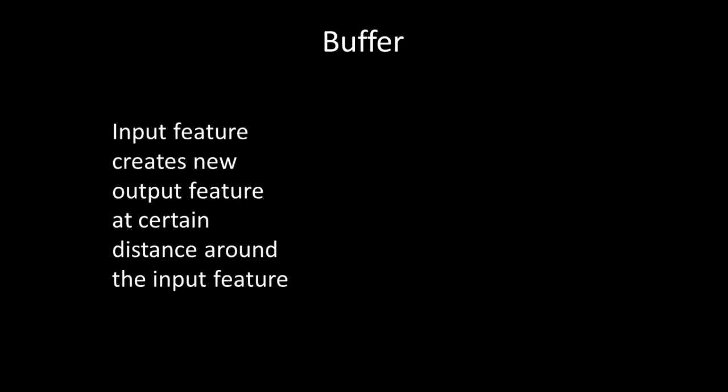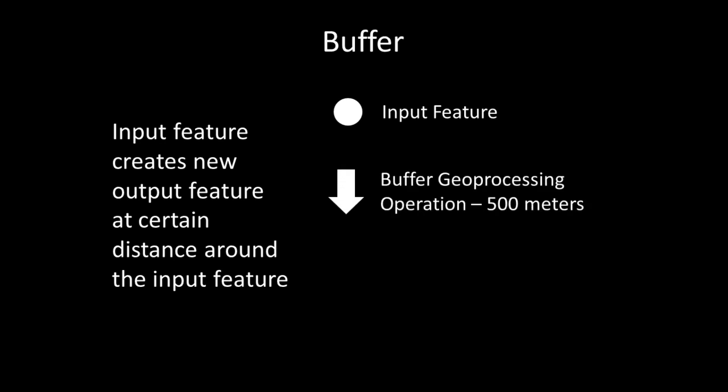Buffer is when an input feature is used to create new output features at a certain distance around the input feature. For example, if we have a point as an input feature, we can tell the buffer geoprocessing operation to give us an area that is 500 meters around the input feature. The buffer geoprocessing operator will then create a new output feature that is 500 meters around the input feature.